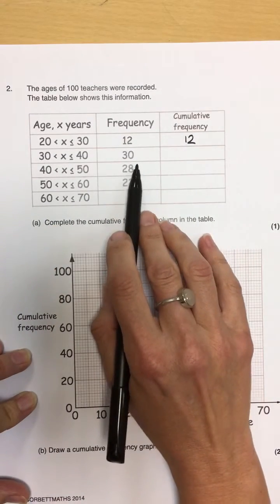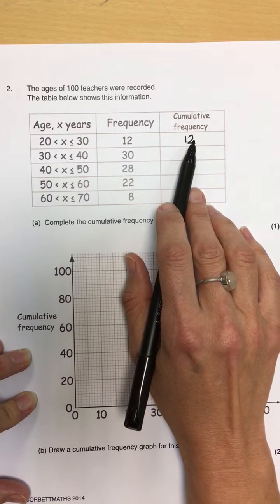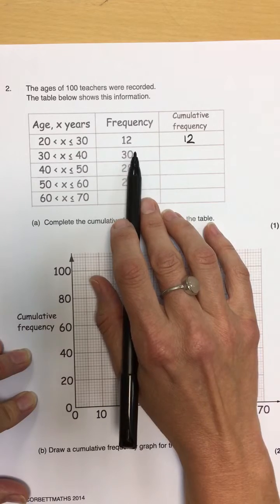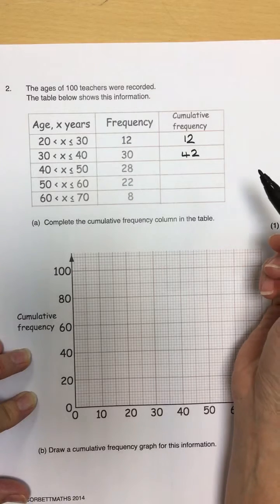Now, if we move on to the second one, then the cumulative frequency is the 12 that we had in the previous column, plus the new value for the second row, which is 30. So, the running total is now 42.